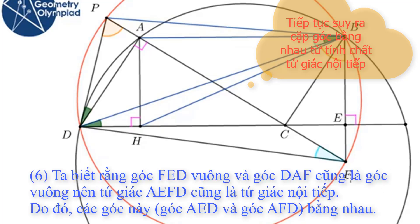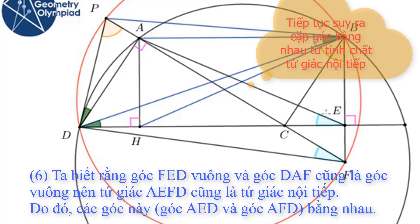I know that angle FED is a right angle and also angle DAF is a right angle. So quadrilateral AEFD is cyclic too, which means these two angles are equal.